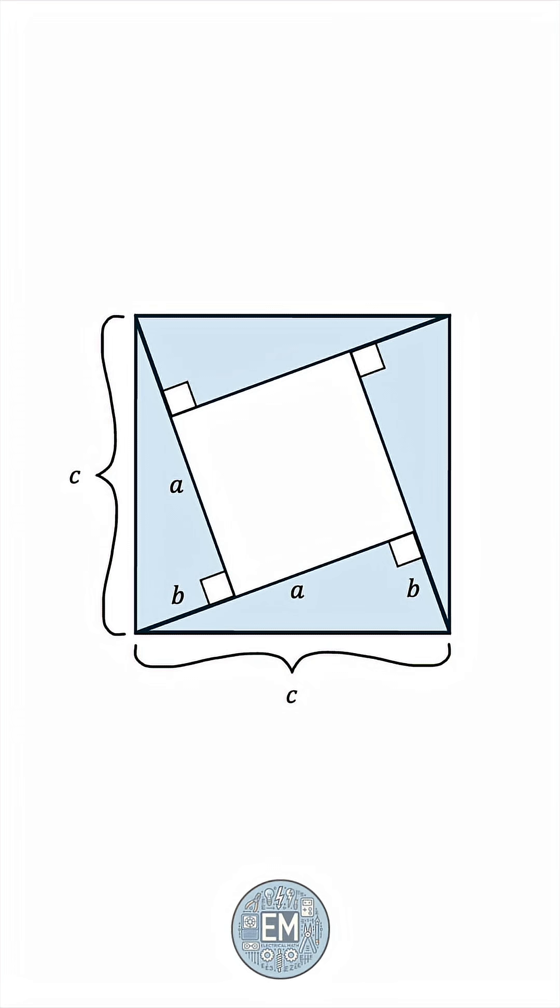What we've done with this arrangement is create this inner square over here. What side length does this square have? Well, this entire length is A, but this chunk is B. So, the square has side length A minus B.